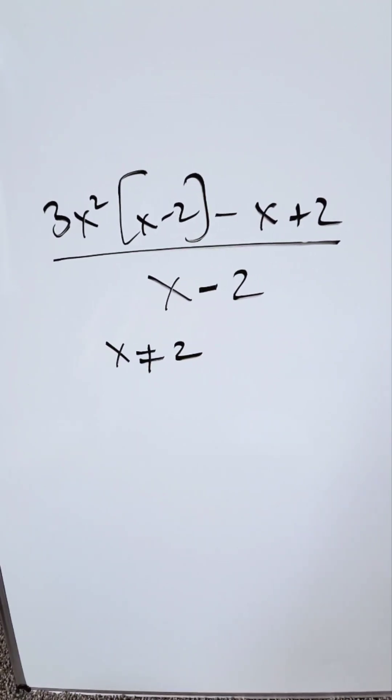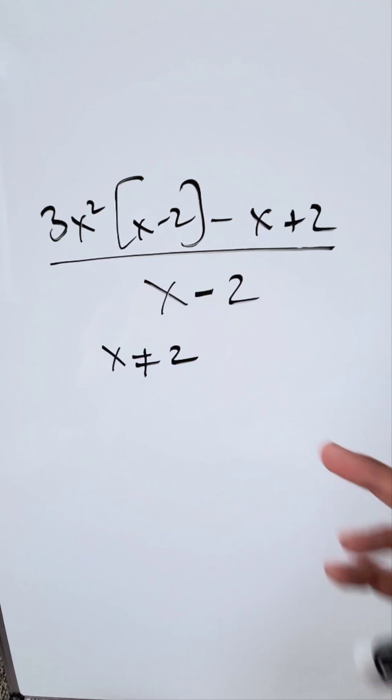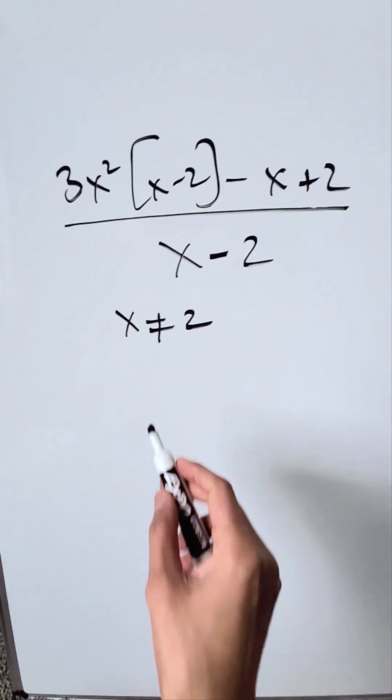We have an expression: 3x squared times (x minus 2) minus (x plus 2) all in the numerator, divided by x minus 2. Assume x is not equal to 2. We have to factor this, so let's do it.